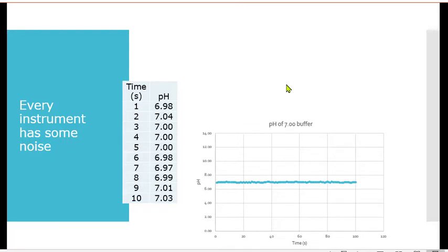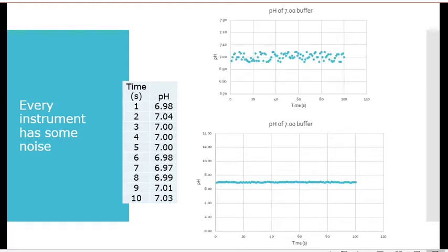In fact, it has a little bit of plus or minus in the hundredth. But every instrument has a little bit of noise. If I blew up just that first 100 seconds and really showed you around the pH 7, you'd see that there's electronic noise. A lot of times that arises from different things. Part of it has to do with using an alternating current circuit to run instruments.